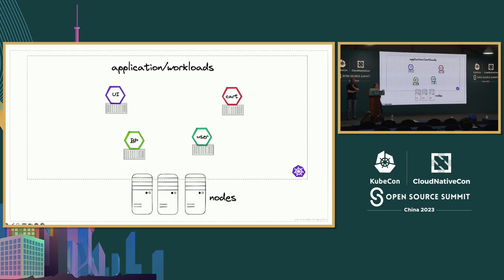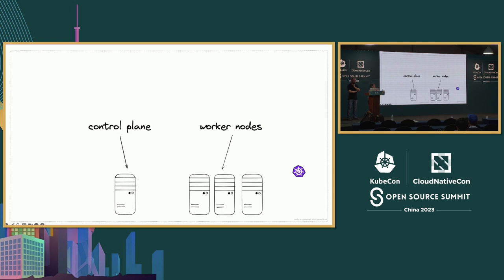At a high level there are two different layers. You have the top part which is the applications and your workloads, and at the bottom you have your infrastructure. In Kubernetes you have a cluster that consists of multiple nodes. On top of those nodes you have workloads running that have containers - whatever application you basically want. Looking closer at the infrastructure side, we have two main parts: the control plane with the API server, and the worker nodes which you can scale up and down.